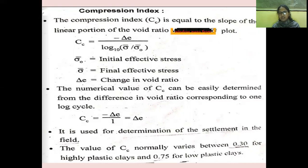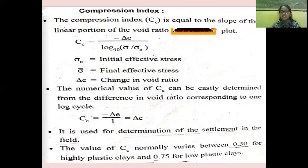Effective stress is defined as the difference between total stress and neutral stress. Sigma-naught-bar and sigma-bar indicate the initial and final effective stresses respectively, and delta E represents the change in void ratio. The voids between soil particles are expelled during compaction and consolidation, causing the void ratio to change throughout the process.